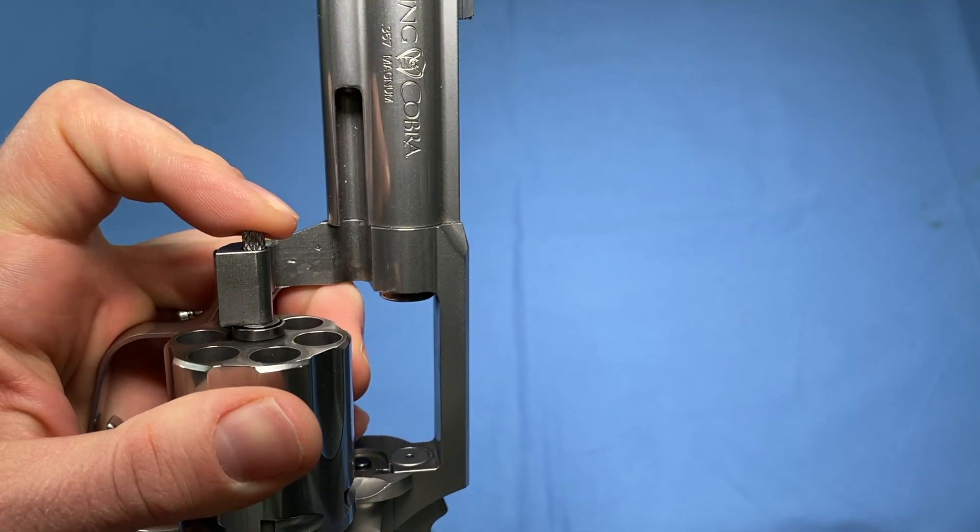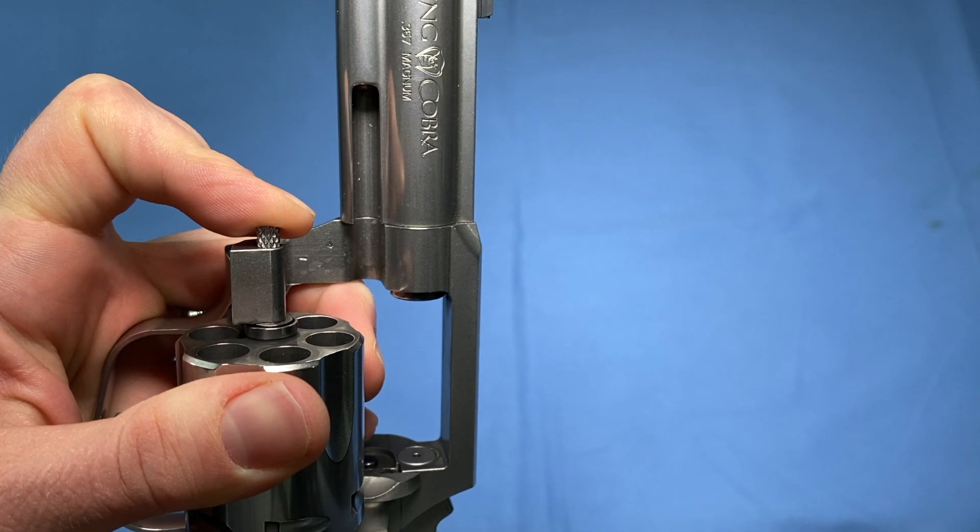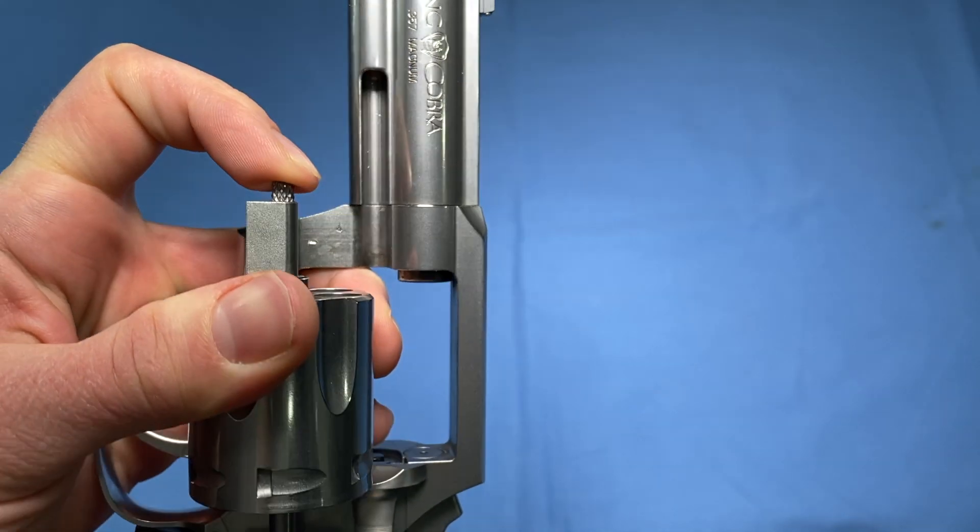That solved the problem, now it opens and closes as it should, but the problem is the little serrations on the plunger get caught in the little sleeve in the arm that the cylinder is attached to.